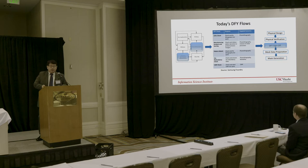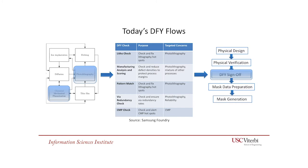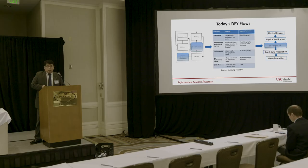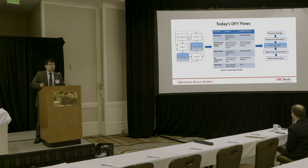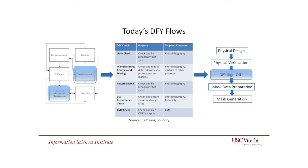This slide is a little busy, but I'll go through it briefly. There are three parts. On the left, you can see manufacturing, represented by different process modules — for example, photo lithography, which patterns your design from the mask to your silicon, and CMP, the planarization process that makes sure each deposited layer is planarized before the next. To the right is the design flow, including physical design such as place-and-route or FPGA, physical verification, DFY sign-off, mask data preparation, and mask generation. In the middle is the DFY flow, adopting a flow published by Samsung as a foundry, showing check items, purposes, and target concerns.